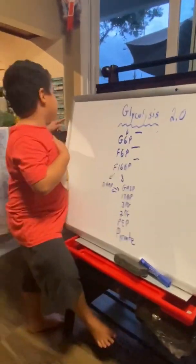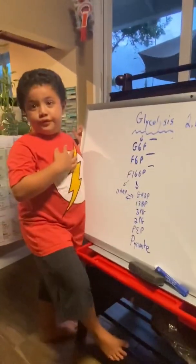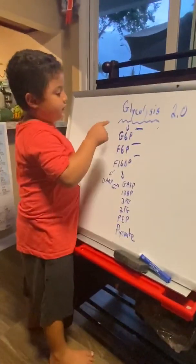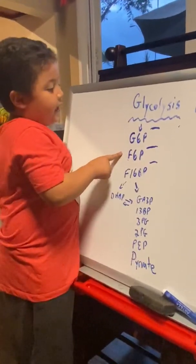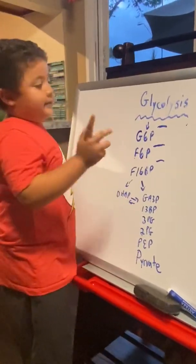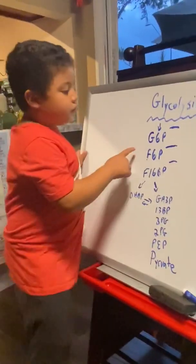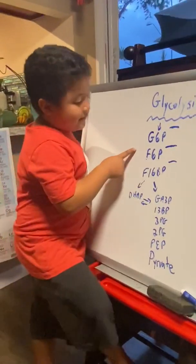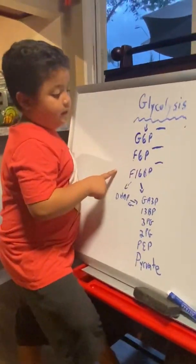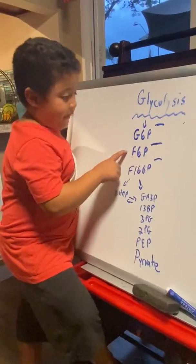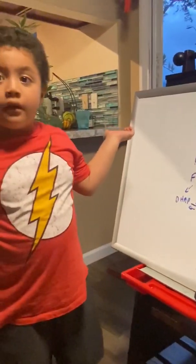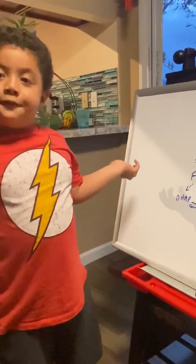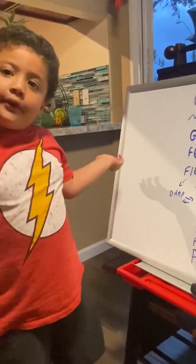Our body breaks down the glucose. Glucose becomes glucose-6-phosphate — how? Hexokinase. Glucose-6-phosphate is going to become fructose-6-phosphate — how? Phosphohexose isomerase.